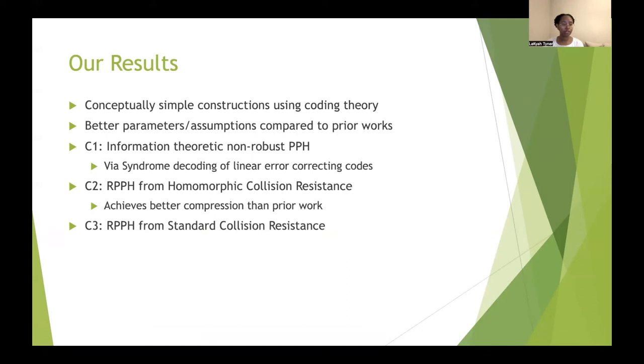Our third construction is another robust property-preserving hash, which, while achieving a slightly worse compression than our second construction, is able to basically match the state-of-the-art, while only requiring minimal assumptions, such as standard collision resistance.